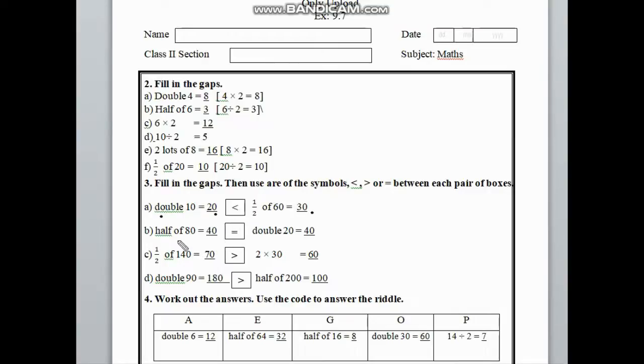Number B: on the left side is half of 80, and on the right side is double 20. Half of 80 is 40, and double 20 is 40. So the left side and right side are the same. In this blank box, we have to use the equal symbol.